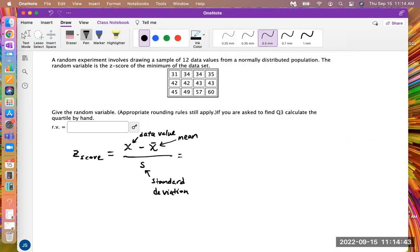But the data value that they want us to find the z-score of is the z-score of the minimum. So yours might say different, maybe it says maximum, then you would be looking at the biggest number. Mine says find the z-score of the minimum. So that means I have to take the 31 and plug it in for the x here in this equation. There's two x's, but the first x is the one we're using.